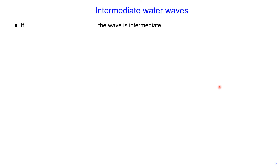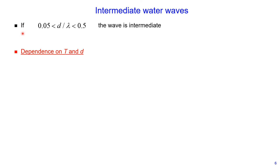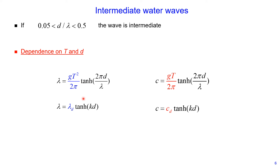Now let's consider intermediate water waves. Intermediate water waves are defined when the ratio of water depth divided by wavelength is between 0.05 and 0.5. For these conditions, both the wavelength and the wave speed depend on wave period and also on water depth.